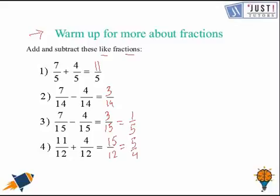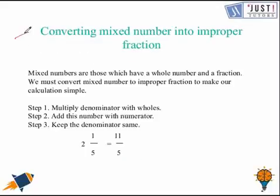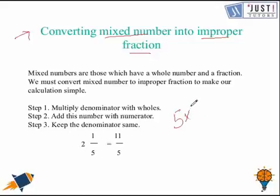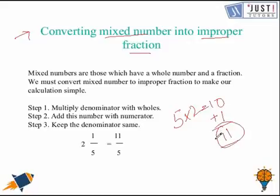Now we learn how to add and subtract mixed numbers. Step 1 is to convert the mixed numbers into improper fractions. Multiply the denominator by the whole number — so 5 times 2 is 10 — then add the numerator: 10 add 1 is 11. The new numerator is 11 and the denominator stays 5, so 2 and 1 fifth equals 11 over 5.